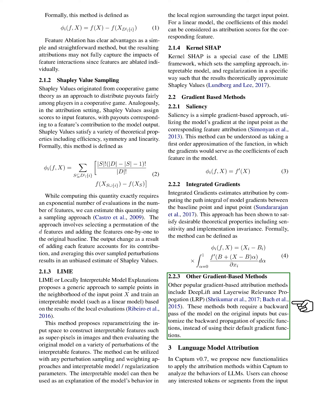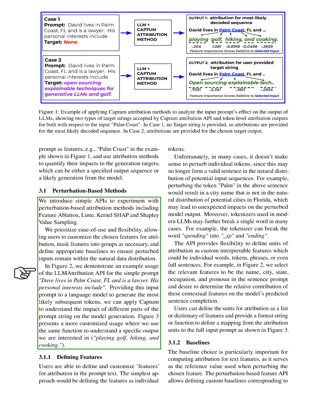Other popular gradient-based attribution methods include DeepLift and Layerwise Relevance Propagation, LRP. These require a backward pass of the model on the original inputs but modify the backward propagation of specific functions instead of using their default gradient functions. In the latest version of Captum, we propose new functionalities to apply these attribution methods to analyze the behaviors of language models. Users can select any tokens or segments from the input prompt as features and use attribution methods to quantify their impacts on generation targets. We also introduce simple APIs for perturbation-based attribution methods including feature ablation, LIME, KernelShap, and Shapley value sampling, prioritizing user-friendliness and flexibility — allowing users to customize features, group them as necessary, and define appropriate baselines.